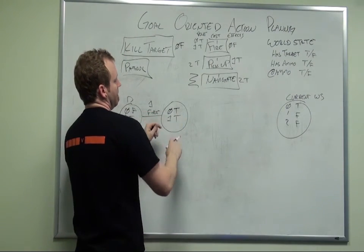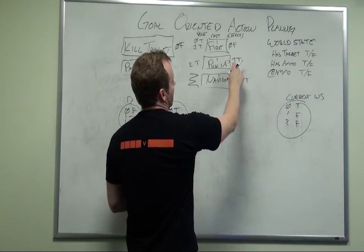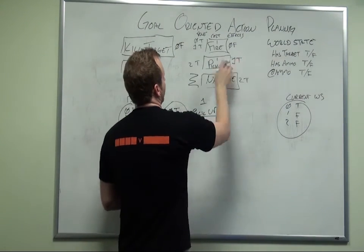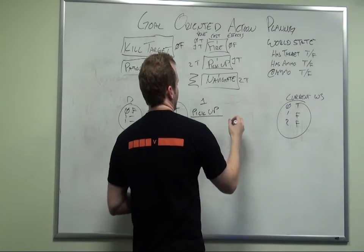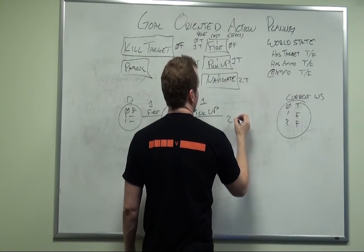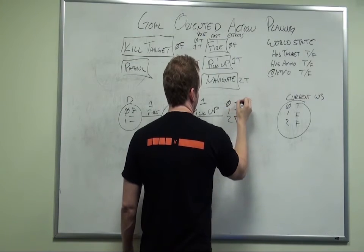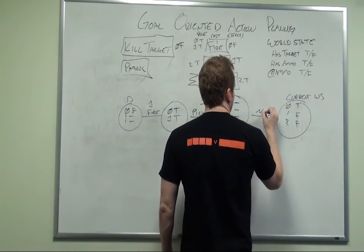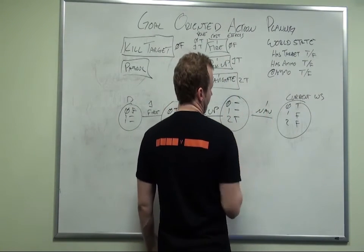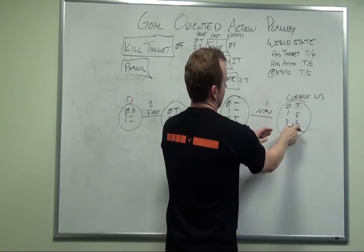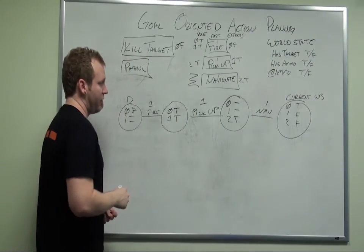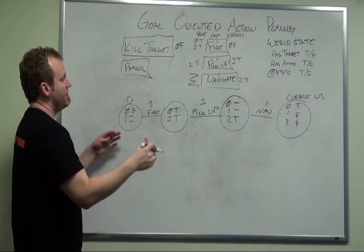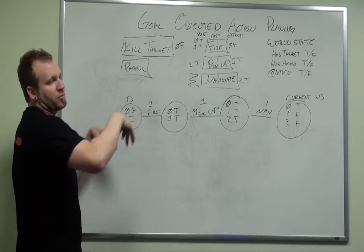Since we have a target, we don't have to worry about that. Now we just need to have ammo, and the only thing that satisfies that is pickup. He has preconditions, so we'll say sub two needs to be true. We repeat the process. Navigate satisfies this, so we'll do navigate with a cost of one. That gets us to our current goal state. Once we get to a world state that's the same as our current goal state, we know we've found a plan that will satisfy our desired goal: navigate to our ammo box, pick up some ammo, shoot at the guy, hope you hit, and he dies. If fire fails, then you just replan and do the whole thing over again.